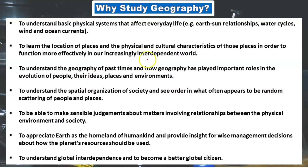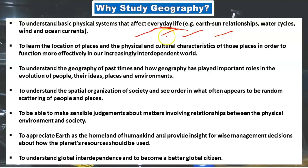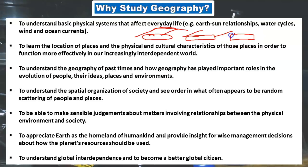Every day there are many things happening to us. The weather is changing, the climate keeps on changing. Sometimes it rains, sometimes it is sunny, sometimes it's a solar eclipse, sometimes a lunar eclipse. Moreover, the environment is changing. You must have heard about El Nino and La Nina, and how this year the monsoon is not going to be very effective. What could be the reasons behind it? You must have heard about cyclones hitting the Odisha coast.